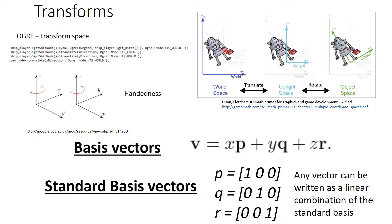You can convert between transformed spaces. So here, to go from world space to object space, you first translate the axis to the origin of the object, and then rotate the axis. And actually, you can represent this mathematically using basis vectors, which tend to be P, Q and R.